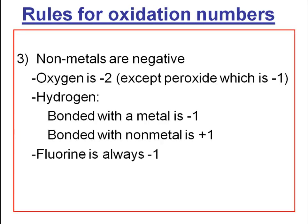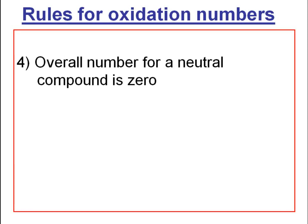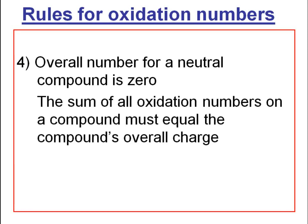Fluorine is always −1. The other halogens are −1 when bonded to metals, but +1 when bonded to oxygen. The overall oxidation number for a neutral compound will be zero, so the sum of all the oxidation numbers on a compound must equal the compound's overall charge.